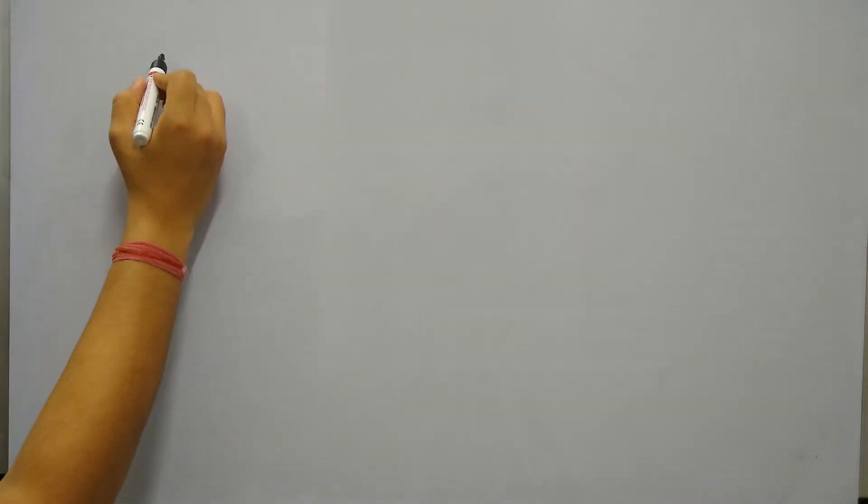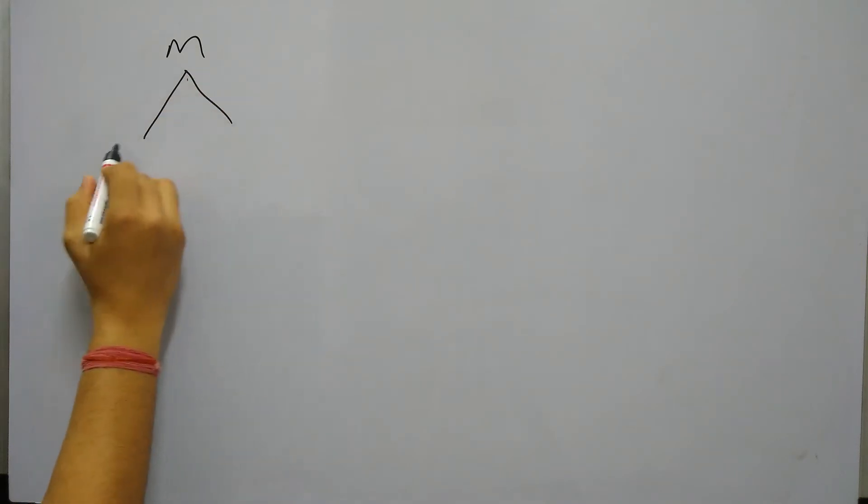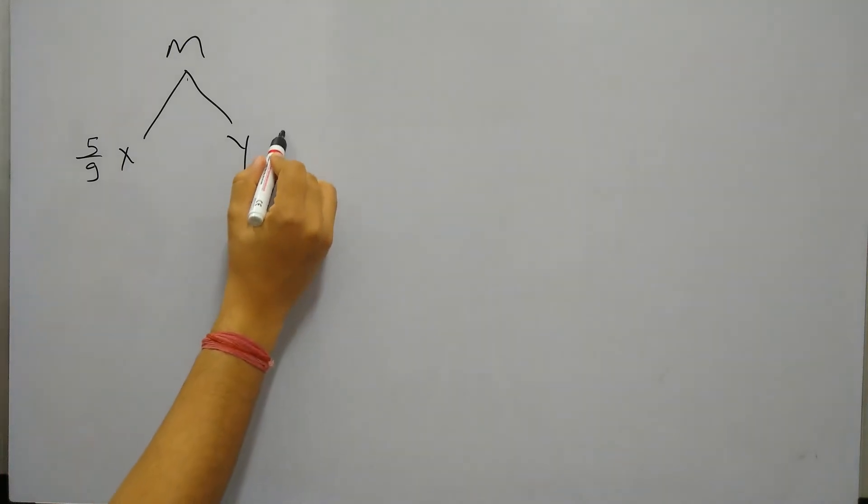So in product M, it is made up of two components X and Y. X and Y are in the ratio of 5 to 4. So X will be 5/9 and Y will be 4/9 of M.